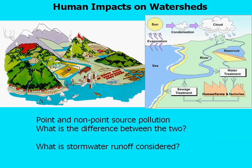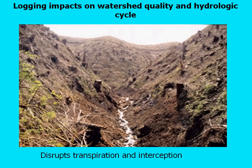Logging and forestry activities impact watershed quality and the hydrologic cycle in a number of different ways. As this picture shows, it disrupts the transpiration of water that trees take up from an area and the interception — rainfall is no longer captured by the forested area which has been removed, so the water has to go someplace else.